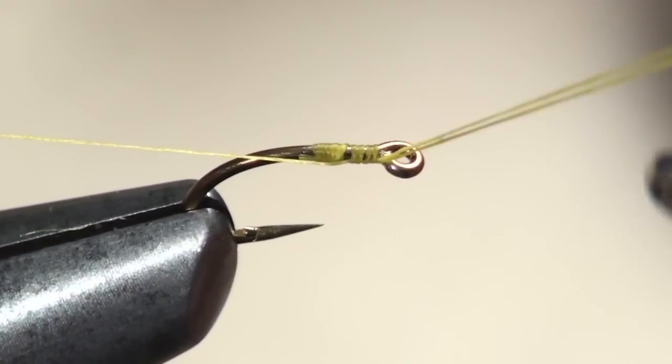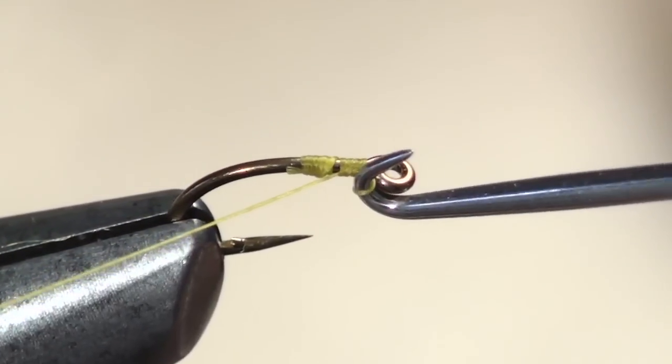Free the thread from the indent, pull thread to close the loop, and remove the tool.